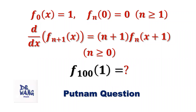Hello everyone, I'm Dr. N. Here is the question. f0 of x equals 1, fn of 0 equals 0, for n is bigger than or equal to 1.